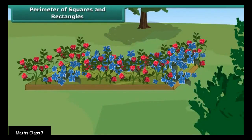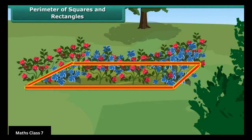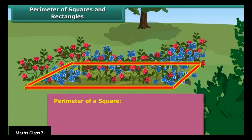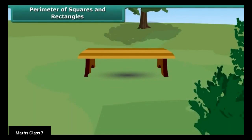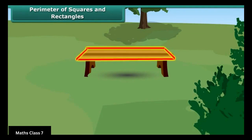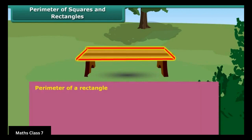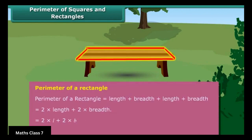Perimeter of squares and rectangles. Students, can you measure the boundary of the flower bed in the park? Yes, by measuring the sides of the flower bed. The perimeter of a shape is the outer boundary of the shape. So the perimeter of a square is the sum of the sides of the square. Can you find the perimeter of the rectangular bench in the park? Yes. The perimeter of a rectangle is the sum of its lengths and breadths.